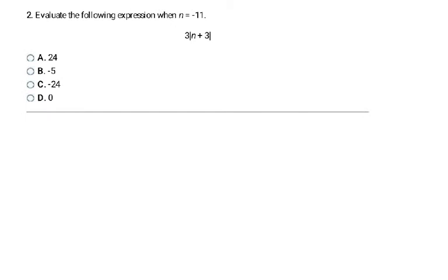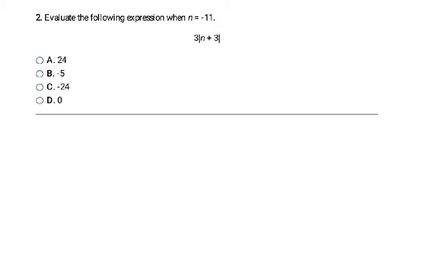In this next problem, we're going to be doing the exact same thing. We will be evaluating. So it says evaluate the following expression when N equals negative 11. So anywhere in this expression, 3 times the absolute value of N plus 3, anywhere I see an N, I'm going to be replacing that with a negative 11.